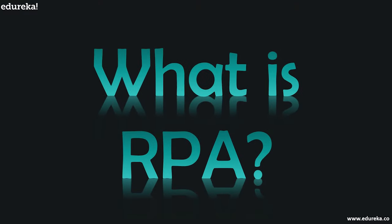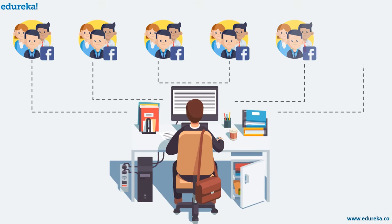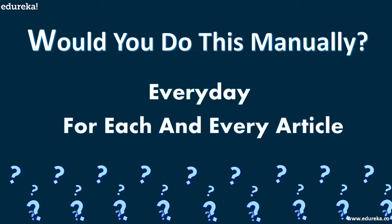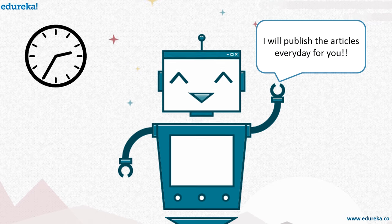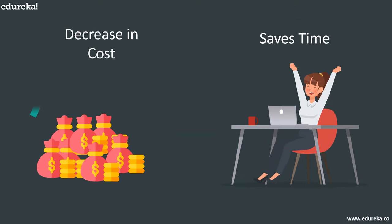Consider an instance where you want to publish your articles on various social groups at a specific time every day. Would you wish to do it manually yourself every day for each and every article? This would cost you a lot and also would be tiresome. Instead, you could just make a robot to do it for you — configure a computer software or robot to interpret human actions and imitate them, publishing articles every day at the mentioned time. That would not only cost less but would also be less tiresome.